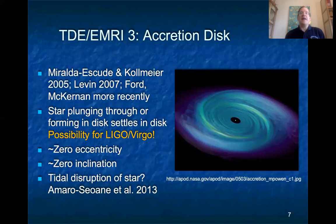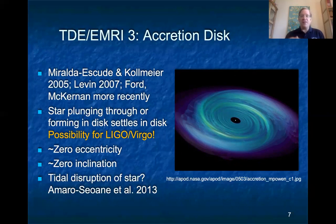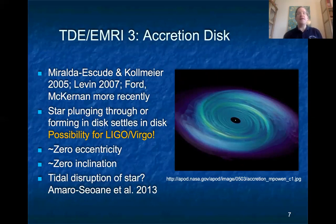The third path involves accretion disks. Suppose the supermassive black hole has active accretion — it's an active galactic nucleus. Various discussions, boosted recently by the possibility that some LIGO and Virgo events might be related to this, suggest that stars or black holes in the bulge around the supermassive black hole may punch through the disk and get ground down into the disk plane, or could even form in the disk. Once captured, they move with the disk spiraling inward. By the time they get close enough to the black hole to be LISA sources, they have roughly zero eccentricity and roughly zero inclination relative to the black hole spin.